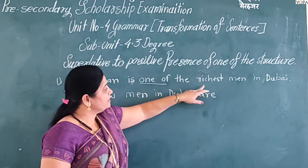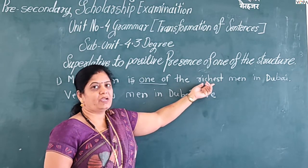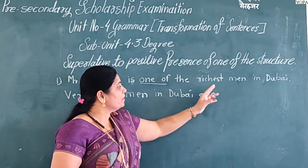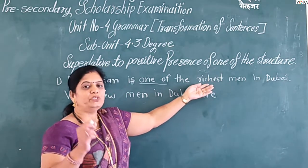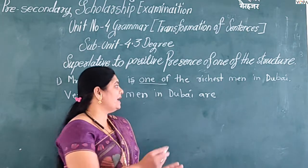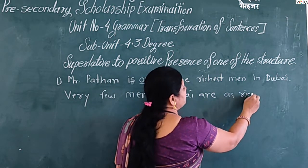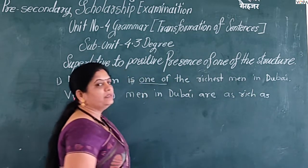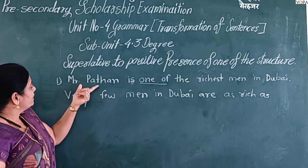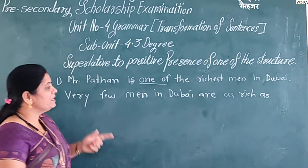Here, the superlative form of the adjective is 'richest,' so the positive form is 'rich.' We take the positive form of the adjective with 'as...as' — 'as rich as.' Then we take the subject of the sentence, Mr. Pathan.